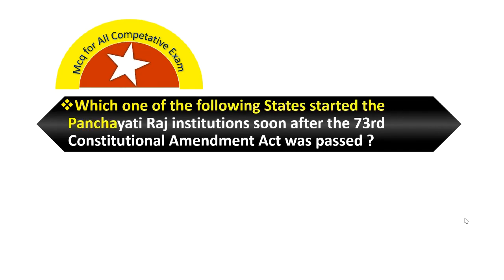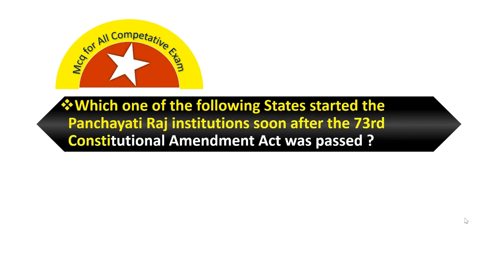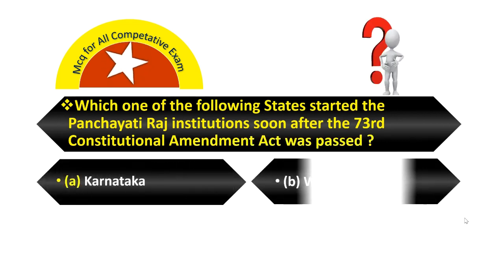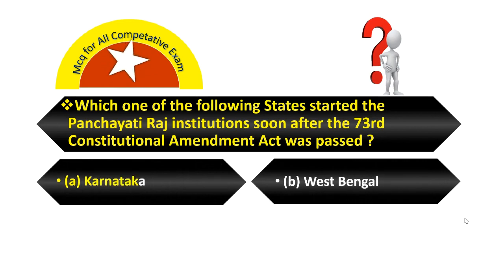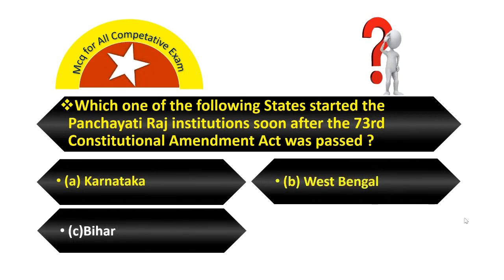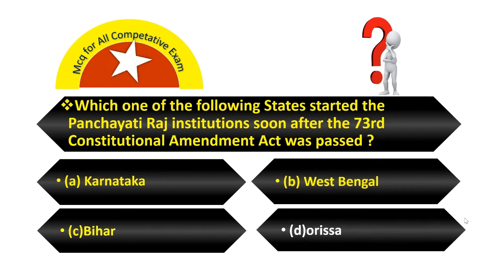Which one of the following states started Panchayati Raj institution soon after the 73rd Constitutional Amendment Act was passed? Option A, Karnataka. Option B, West Bengal. Option C, Bihar. Option D, Odisha.